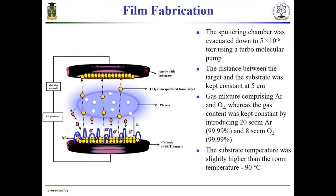Titanium dioxide thin films were prepared by means of magnetron sputtering. A titanium target of high purity was used in the sputtering process. The sputtering chamber was pumped down to the order of 10⁻⁶ torr using a molecular pump. The distance between the target and the substrate was kept constant at five centimeters. The magnetron discharge was performed in a gas mixture of argon and oxygen. The working total pressure was maintained at 2×10⁻³ mbar, and the power was kept constant at 100 watts.